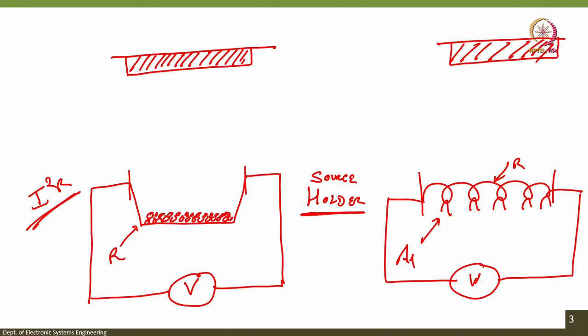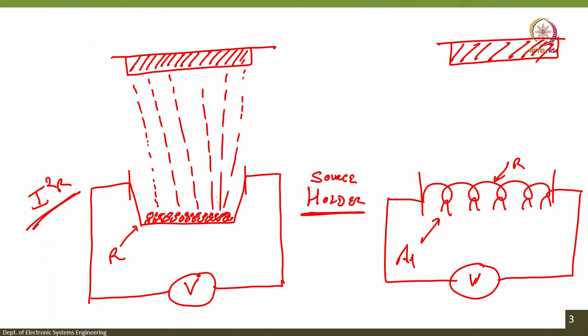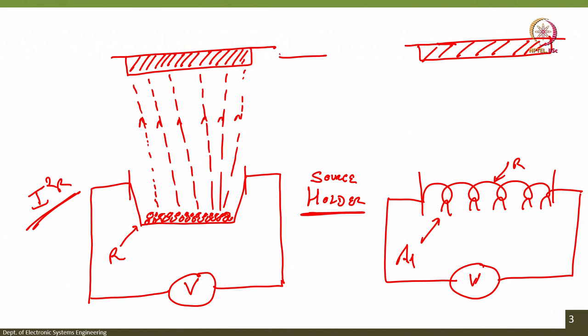Because of Joule heating, the material loaded onto the boat will melt, and after melting it will start evaporating upward toward the oxidized silicon wafer substrate. The material melts and evaporates in the direction of the substrate.